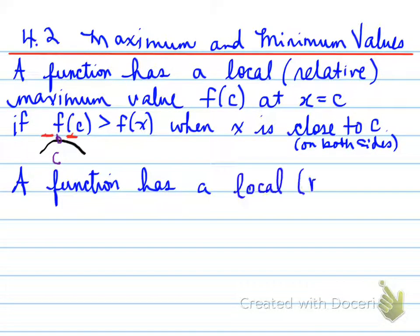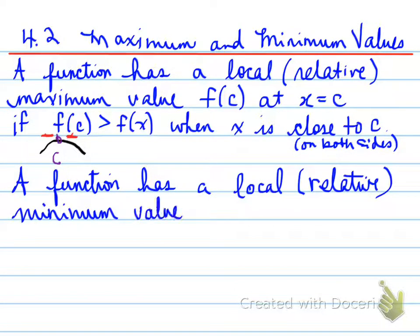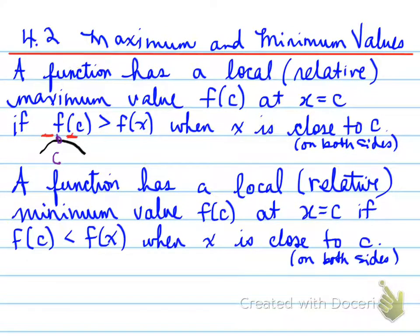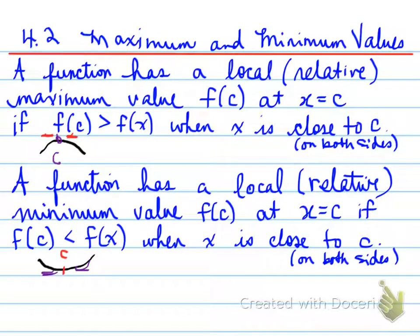For a function that has a local minimum value, f(c), at x equals c, this happens if f(c) is less than f(x) when x is close to c. So what that means is, when we're looking at a minimum, we have a point — let's say c — and on either side of c, those y values are actually higher than the y value at c, so that it is a local minimum.